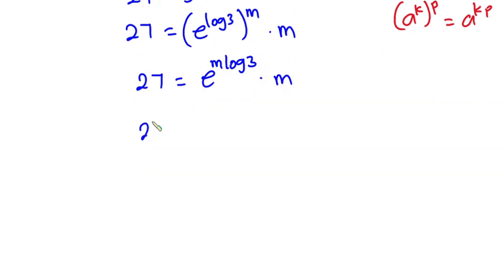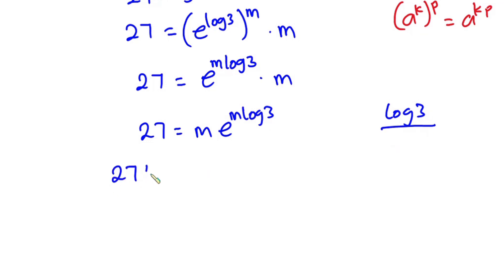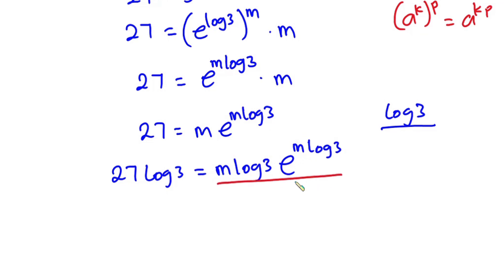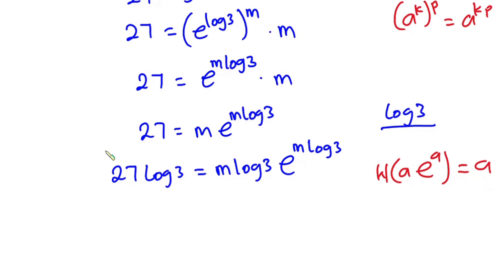We rewrite as 27 equals m times e to the power (m log 3). Moving m to the front, we have 27 equals m times e to the power (m log 3). Now let's multiply each side of this equation by log 3, giving us 27 log 3 equals m log 3 times e to the power (m log 3). The right-hand side is now of the form a times e to the power a, so we can introduce the Lambert W function.